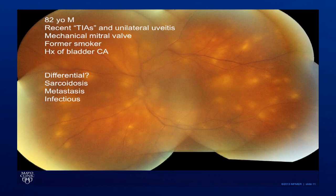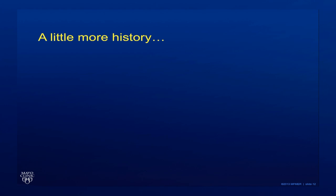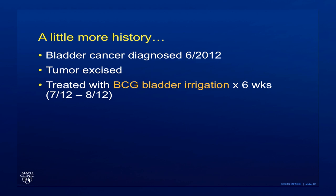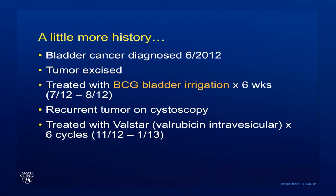Now we have a little bit more history. His bladder cancer was diagnosed less than a year prior to presentation. The tumor was excised and he was treated with BCG bladder irrigation weekly for six weeks in July and August. When he had repeat cystoscopy, there was still tumor present. He was then treated with intravesicular chemotherapy, six cycles, going through January — which was just about the time when he began to have neurological and visual symptoms, and when his decreased vision in his left eye began.